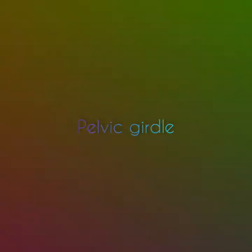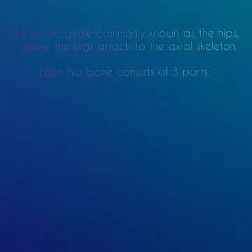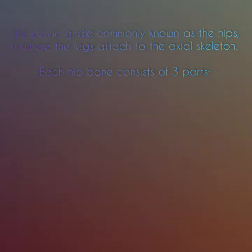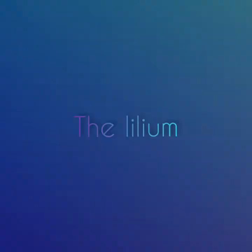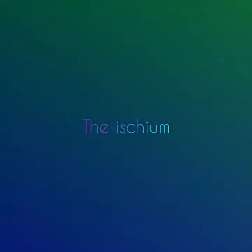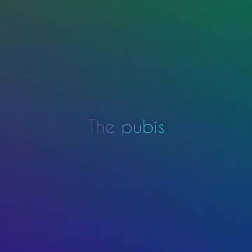The pelvic girdle, commonly known as the hips, is where the legs attach to the axial skeleton. Each hip bone consists of three parts: the ilium, which is the top portion of each hip bone; the ischium, which is a curved bone that makes up the base of each hip bone; and the pubis, which is located in the front part of the hip bone.